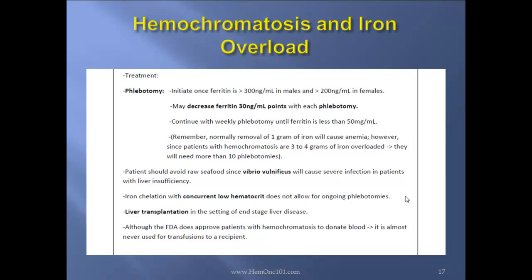Patients should also avoid raw shellfish, since Vibrio vulnificus will cause severe infections in patients with liver insufficiency. Iron chelation is used with concurrent low hematocrit that does not allow for ongoing phlebotomies. Liver transplantation is considered in the setting of end-stage liver disease. Although the FDA does approve patients with hemochromatosis to donate blood, it is almost never used for transfusions of recipients.